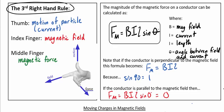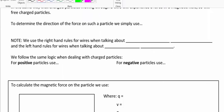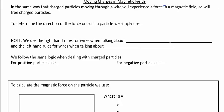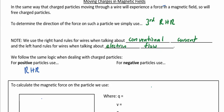Just like we see forces on wires carrying charges, we also notice forces on individual particles floating in a magnetic field. To find the direction of force on a particle, simply use the third right-hand rule. We use the right-hand rule when talking about conventional current or positive particles. You can use the left-hand rule if you want to think about electron flow, since your left hand is the exact opposite of your right. For negative particles, use the left-hand rule, and it will give you the correct direction.